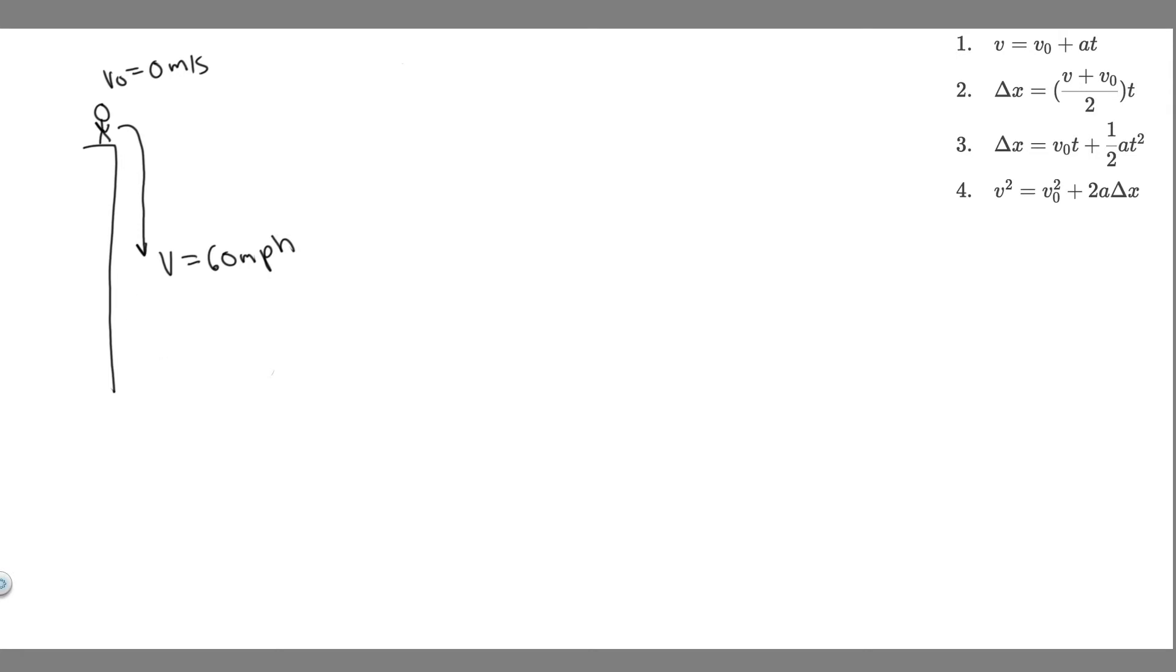So the first thing we want to do is write out the given. So what information are we told? We're told their initial velocity. They're going to be starting at rest, so 0 meters per second. We're told their final velocity, the point at which we're trying to find how long it takes for them to reach this, 60 miles per hour. And then we're also given, or not given, but we're assuming the acceleration is